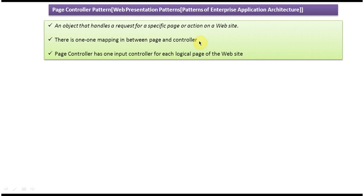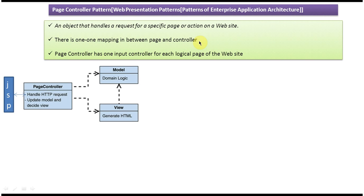Here you can see a JSP page. For this JSP page, one page controller will be there. Whatever request comes from this JSP page will be handled by this page controller. It will update the model, and based on the model information, it will decide which view to send to the client.